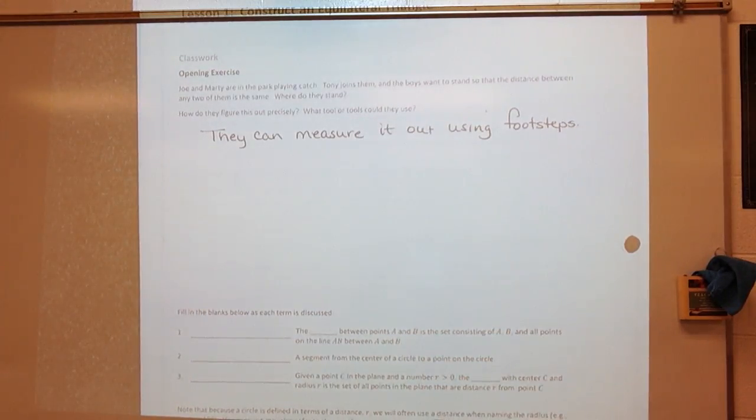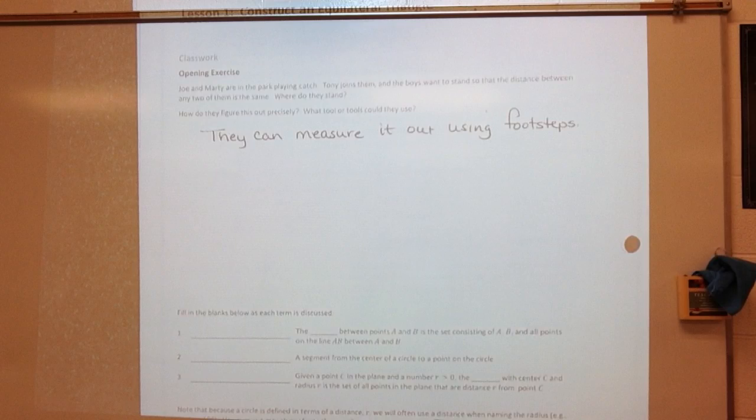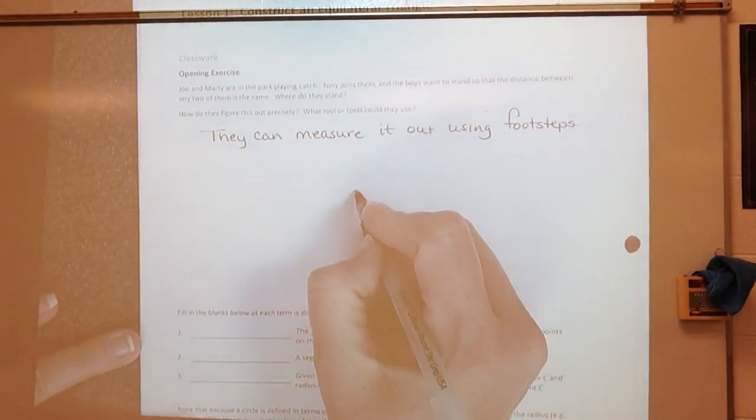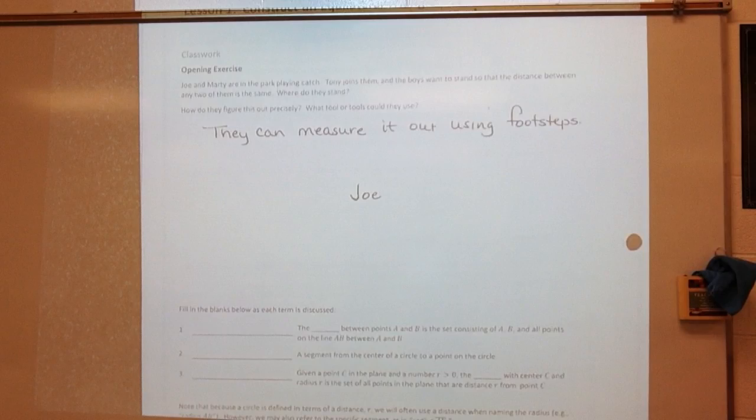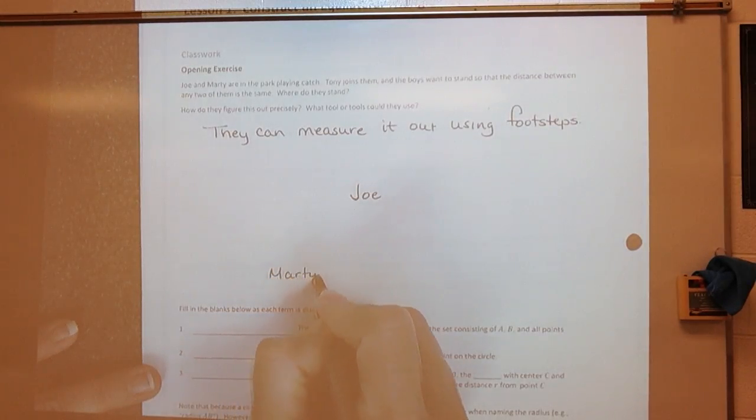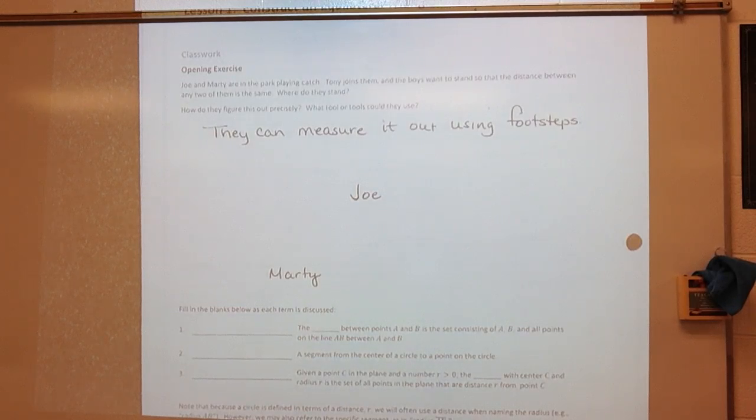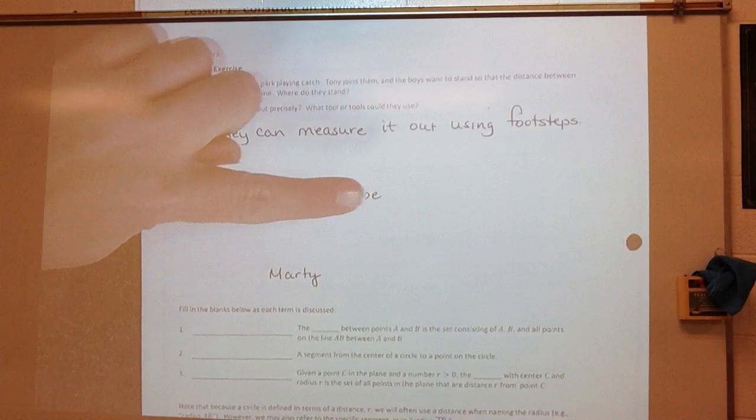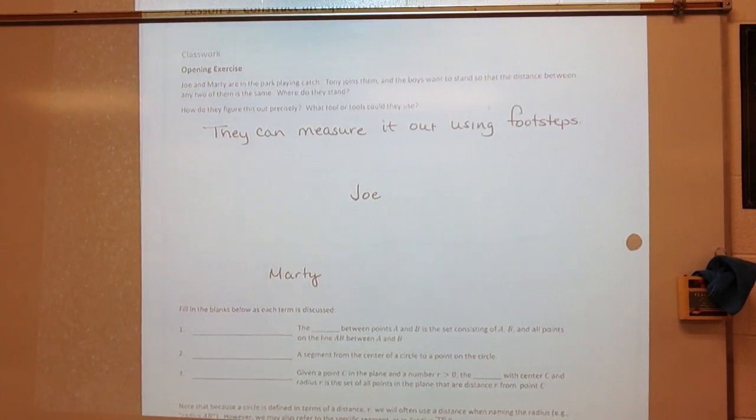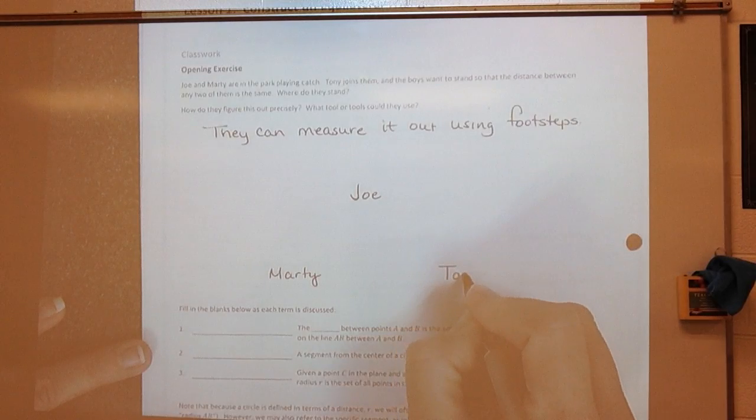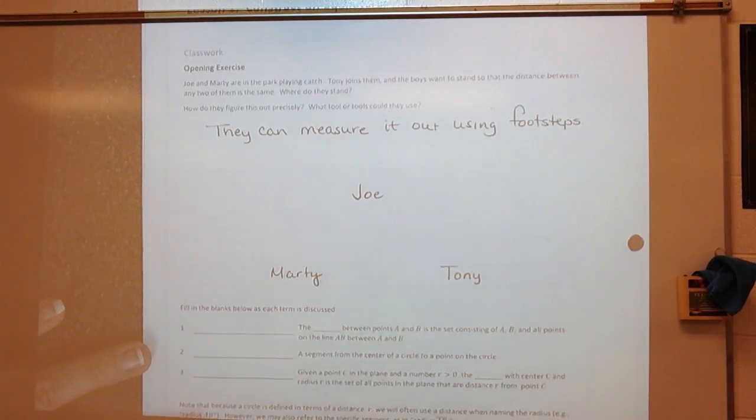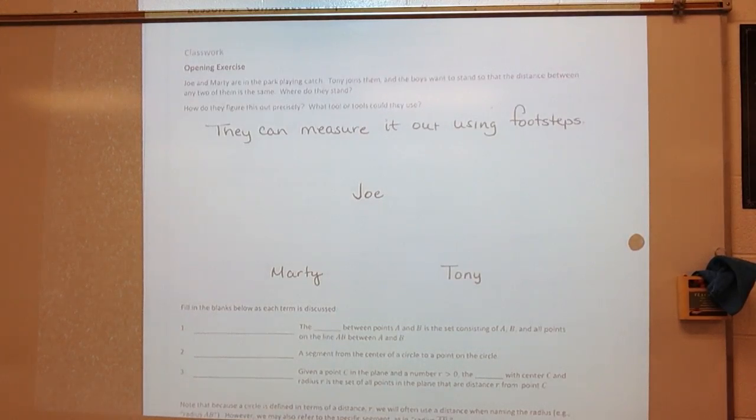All right, I think I've even had people suggest that someone can lay down. All right, but let's think about what it would look like if we want to make sure they have the same space. So let's say that I have Joe here, and let's say I put Marty here. How do I assure that the same space is between Joe and Marty, Marty and Tony, and Joe and Tony? Where would Tony have to go? Well, Tony would have to go over here somewhere. So then we would make sure that our space between the three of them is equal.